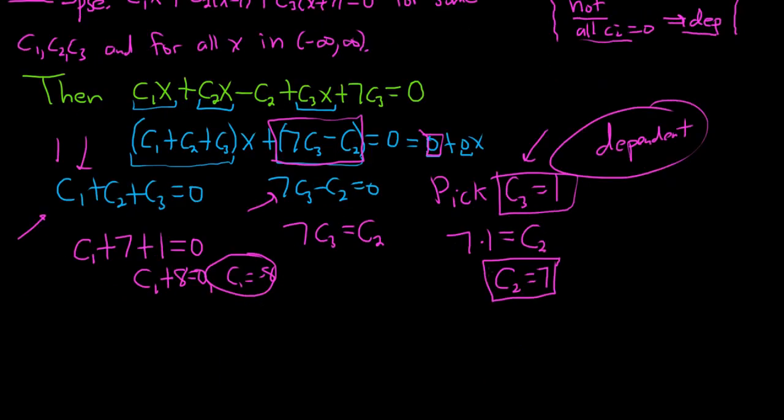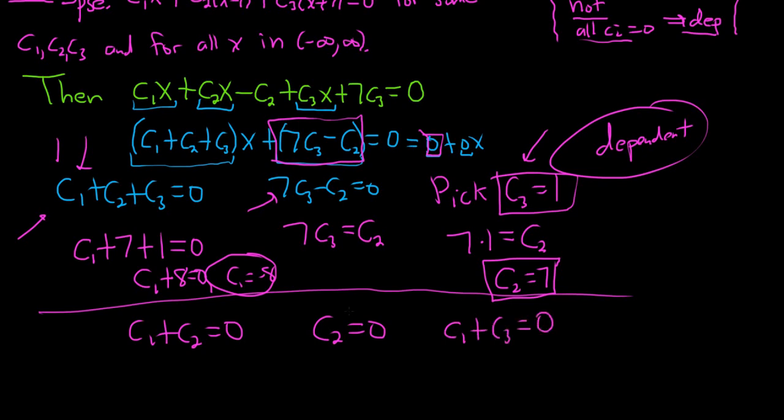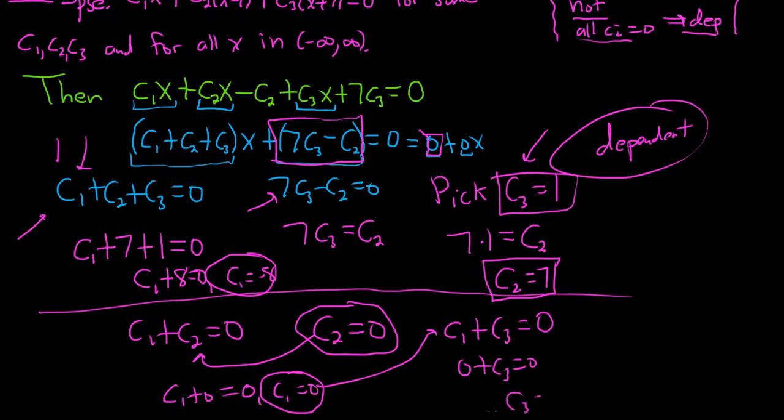So for example, say you get to that step, and you have something like c₁ + c₂ = 0, c₂ = 0, c₁ + c₃ = 0. So you get something like this. You say, okay, c₂ is zero. You put it in here, and you get c₁ = 0. You put it in here, and you get c₃ = 0. In this case, the answer would be independent.